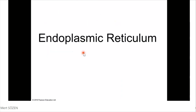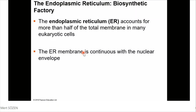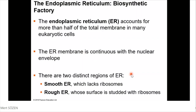The first organelle of the endomembrane system is the endoplasmic reticulum. The endoplasmic reticulum accounts for more than half of the total membrane in many eukaryotic cells. The ER membrane is continuous with the nuclear envelope. There are two distinct regions: smooth endoplasmic reticulum, which is ER without ribosomes, and rough endoplasmic reticulum, which has ribosomes bound on its surface.